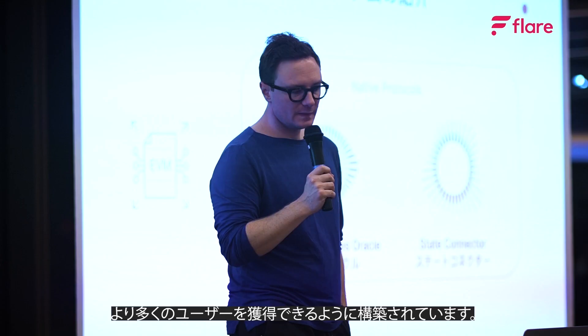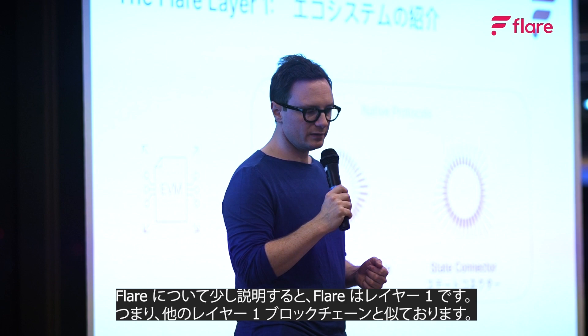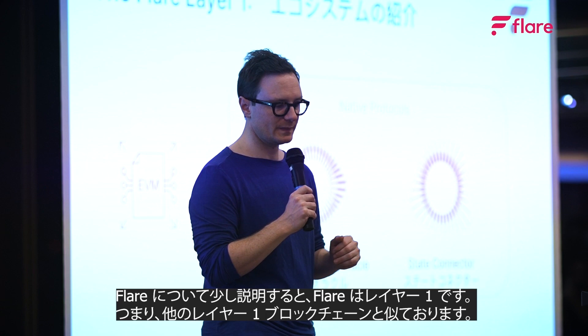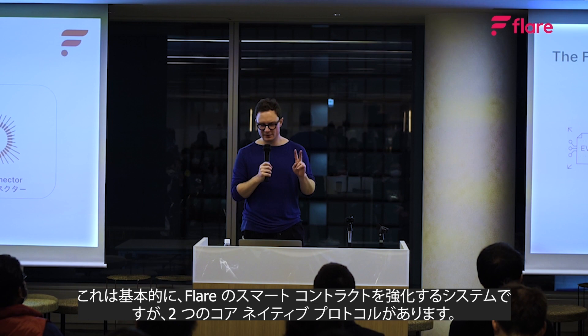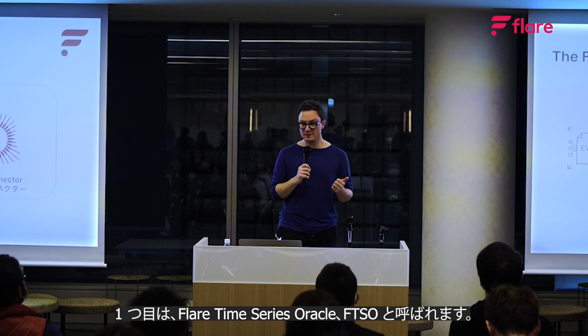Flare is a Layer 1, like other Layer 1 blockchains. It integrates the Ethereum Virtual Machine, which is essentially the system that powers smart contracts on Flare. But it has two core native protocols. The first is called the Flare Time Series Oracle, the FTSO.